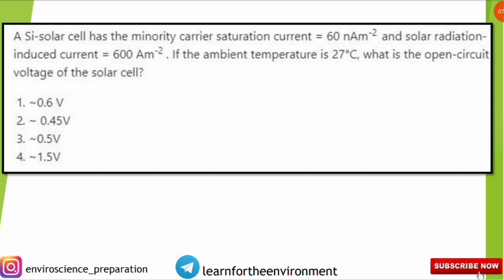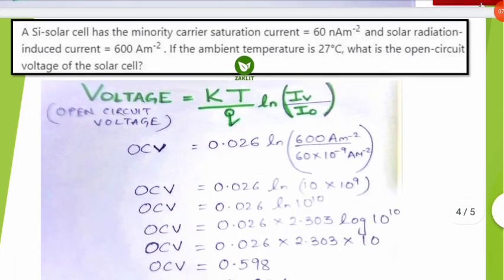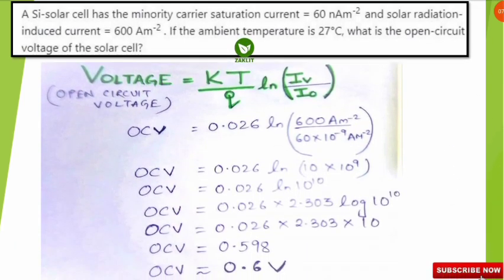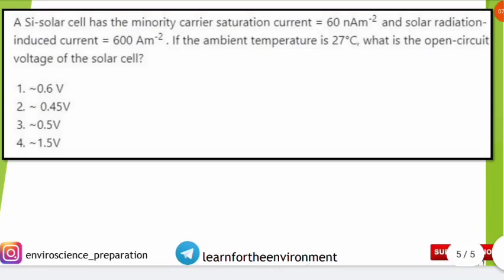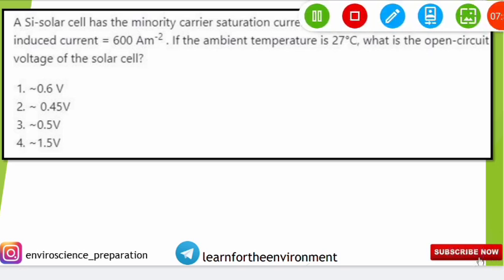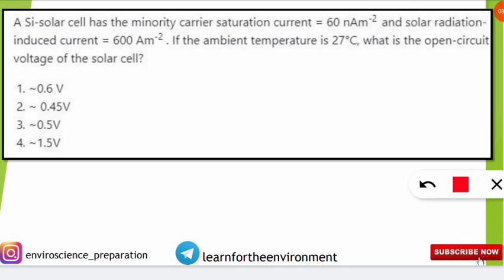To solve this type of question, remember Boltzmann's constant, the charge of the electron, and the formula V_oc = (KT/q) × ln(I_v / I₀), where I_v is the solar radiation induced current and I₀ is the saturation current. I hope you've learned something new. Note down the formula, join the Telegram page for daily quizzes, subscribe to the channel, and hit the notification icon. See you in the next video — keep smiling and believe in yourself!